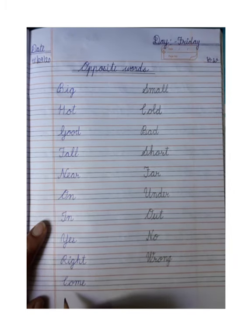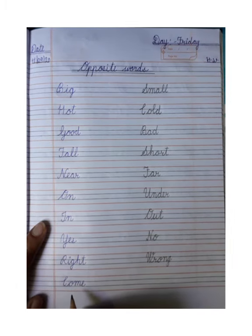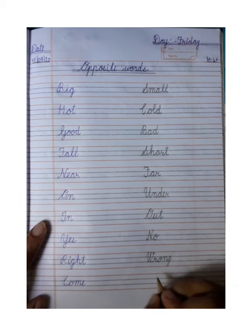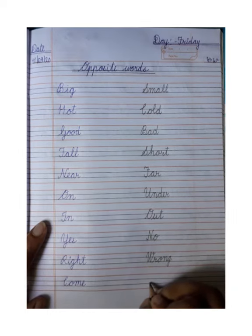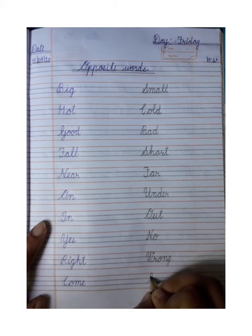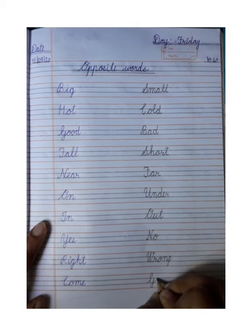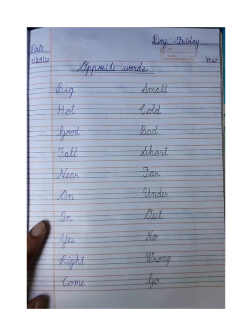Next, come — what is the opposite of come? Come yani aana, and go yani jaana. So we will write G-O, go.